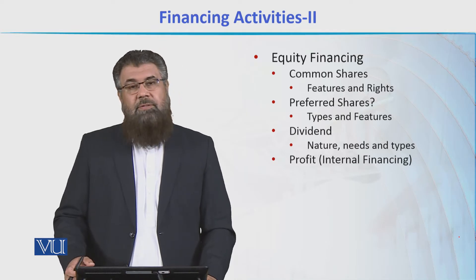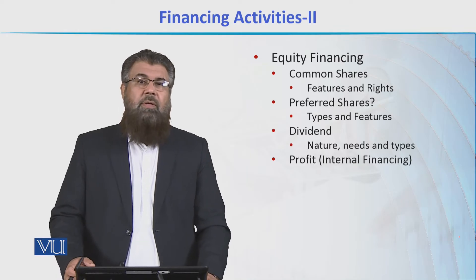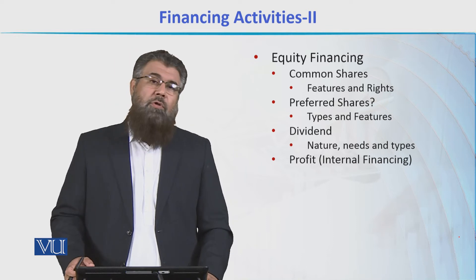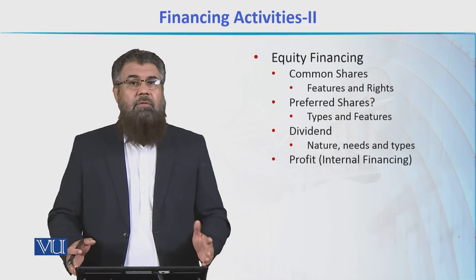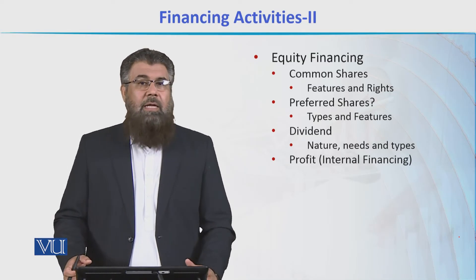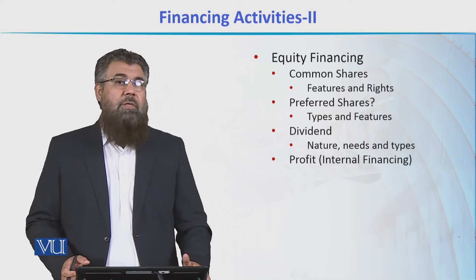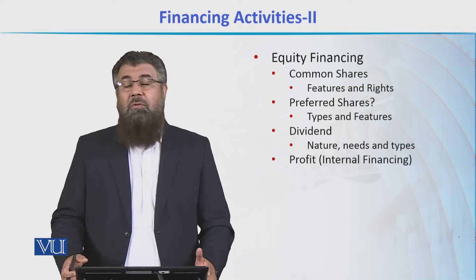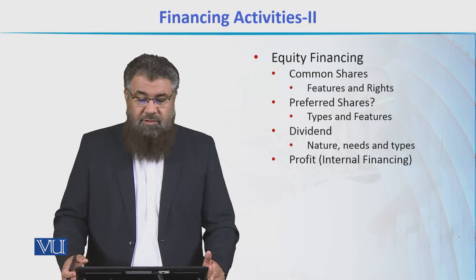What are these preferences? Number one, preference shareholders are given profit — that is, dividend — before the common shareholders. If a company earns some profit and wants to give dividend, then the preference shareholders are first in line to get that dividend, and the common shareholders would get dividend afterwards. If no profit is left afterwards, then certainly common shareholders will not get anything. So this is one preference that preferred shareholders get.